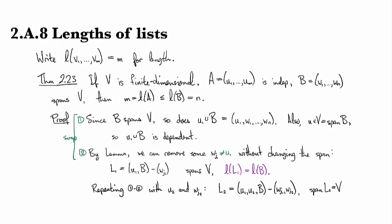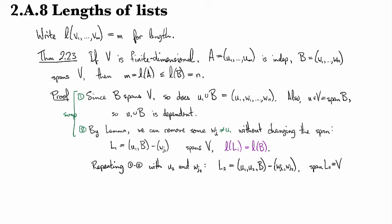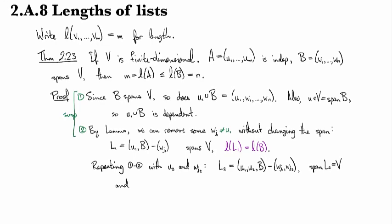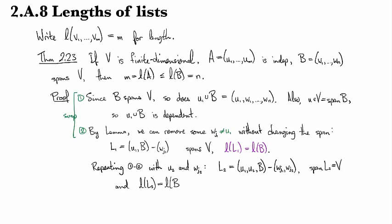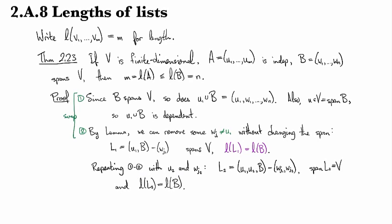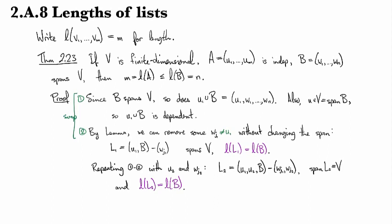And we know that the span of L2 is going to still equal V. And we know that the length of L2 is going to equal the length of our original B. Because once again, we've just pulled one out and added one in so the length stayed the same.